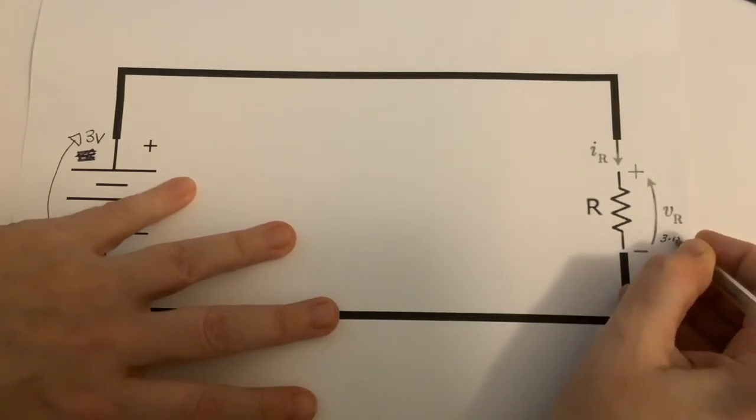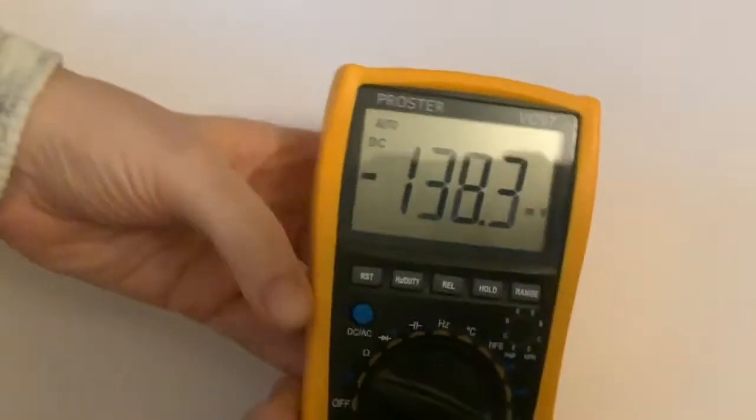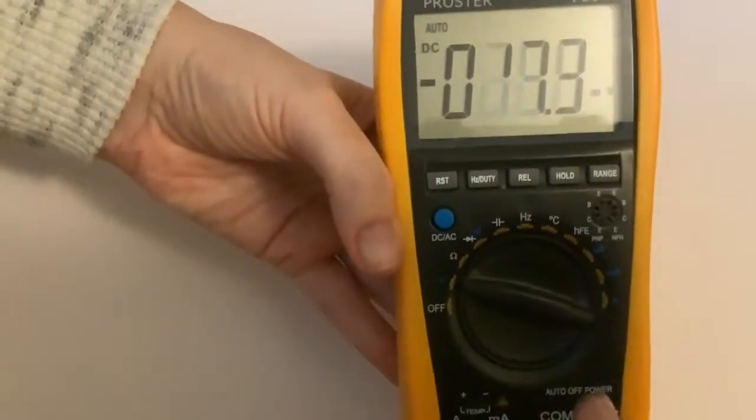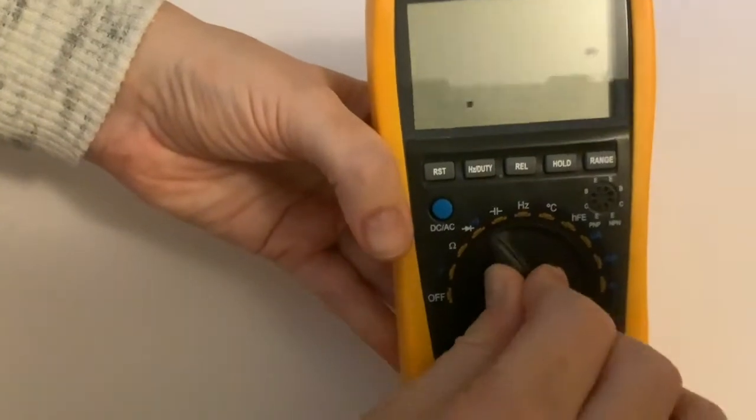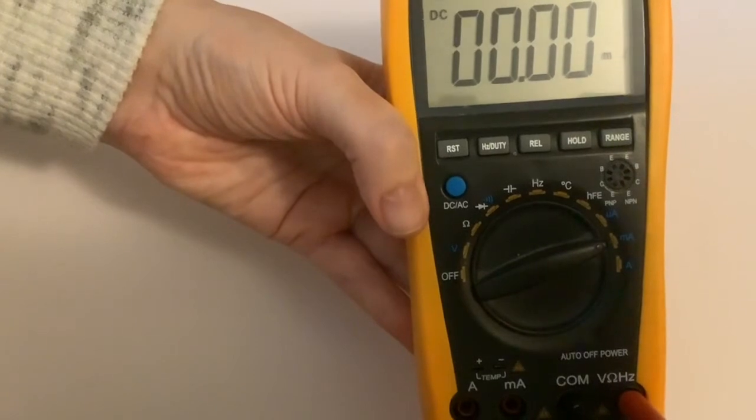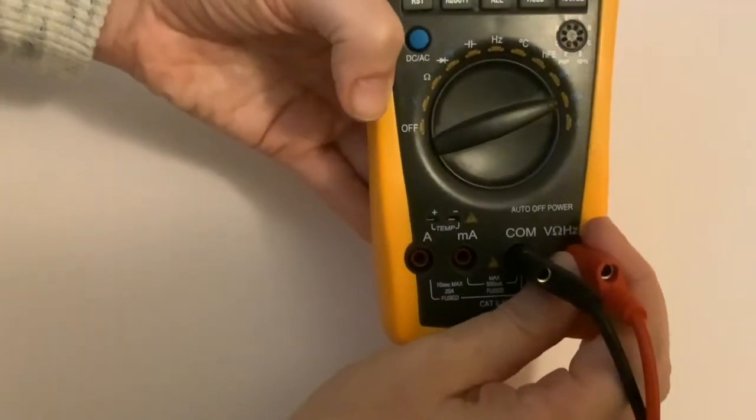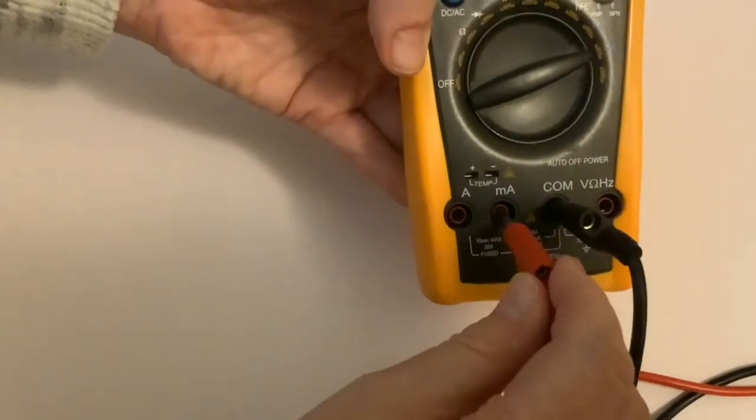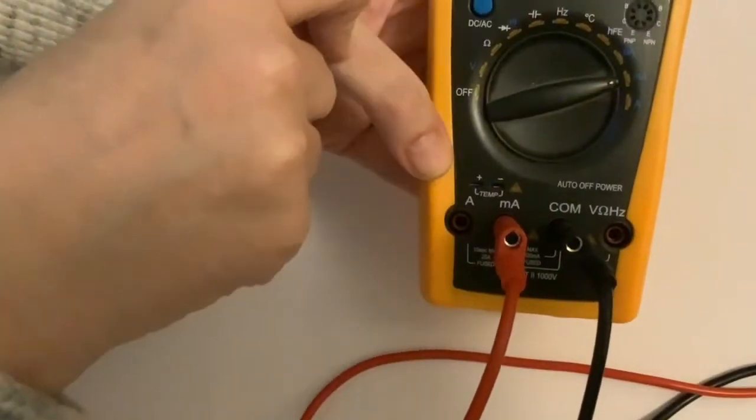Measuring the current next. I need it in amps or milliamps. Should I put it in milliamps? Yeah, put it in milliamps. Put the leads in the right sockets as well. I've got to get this in milliamps. Just double-check you're on the milliamp setting. Okay, so that's all set up ready for measuring current through the circuit.